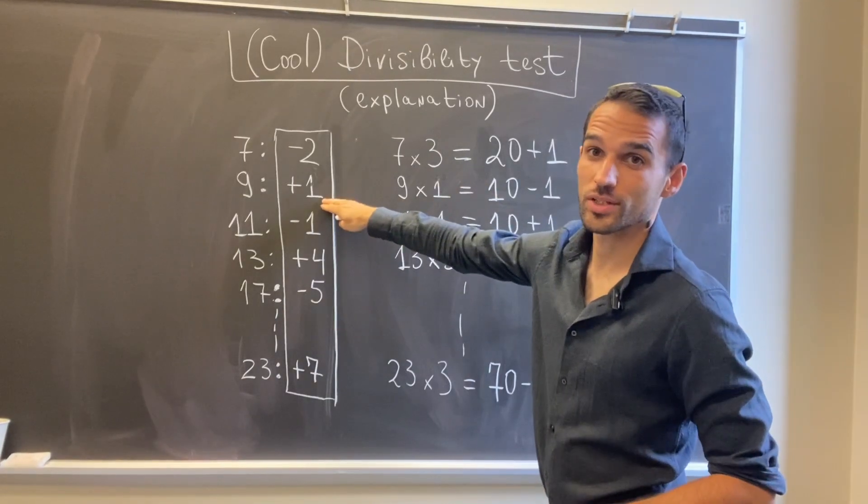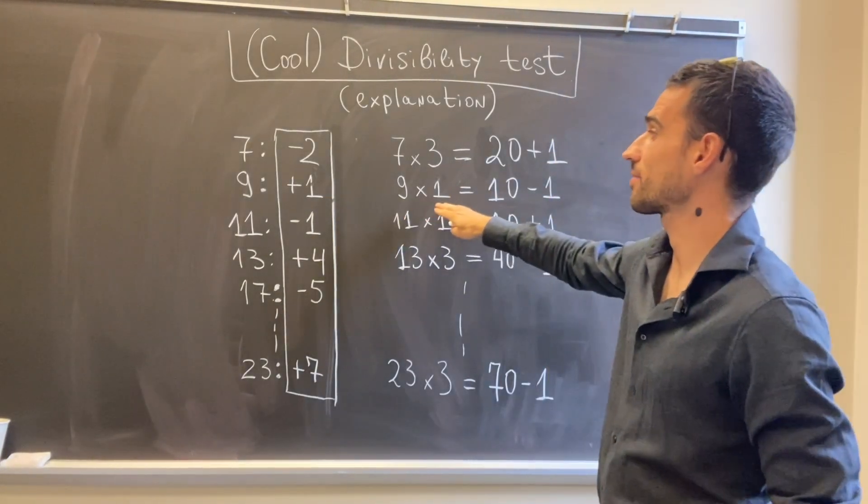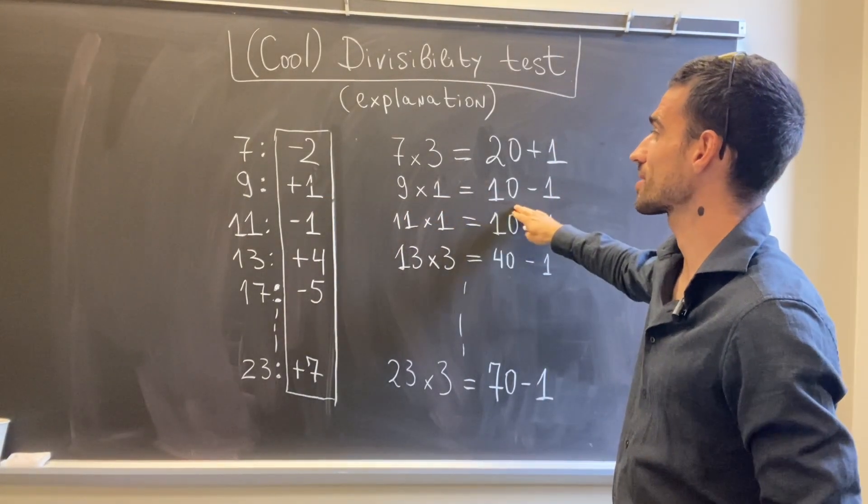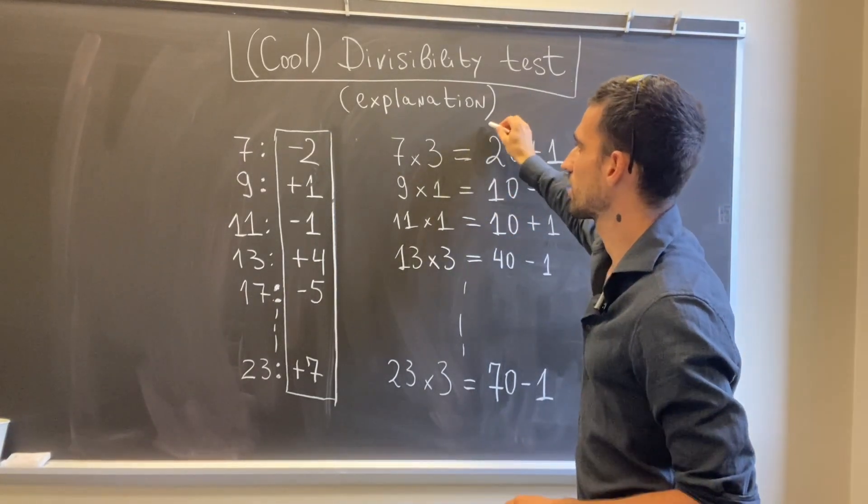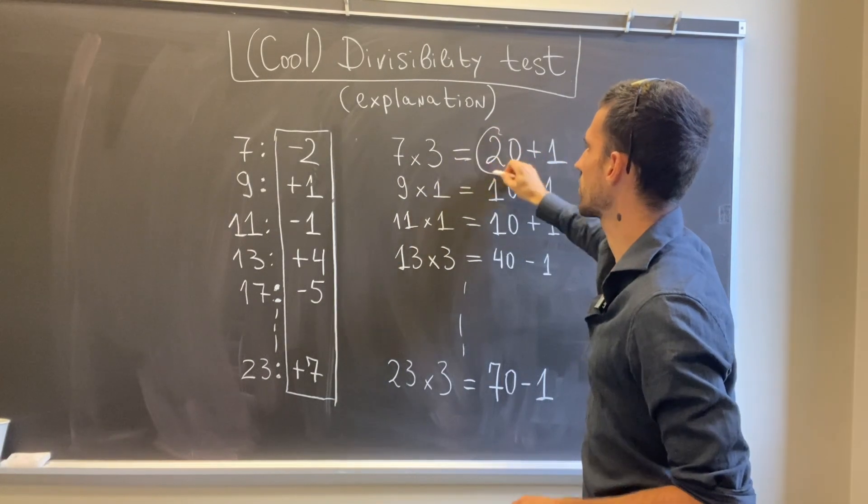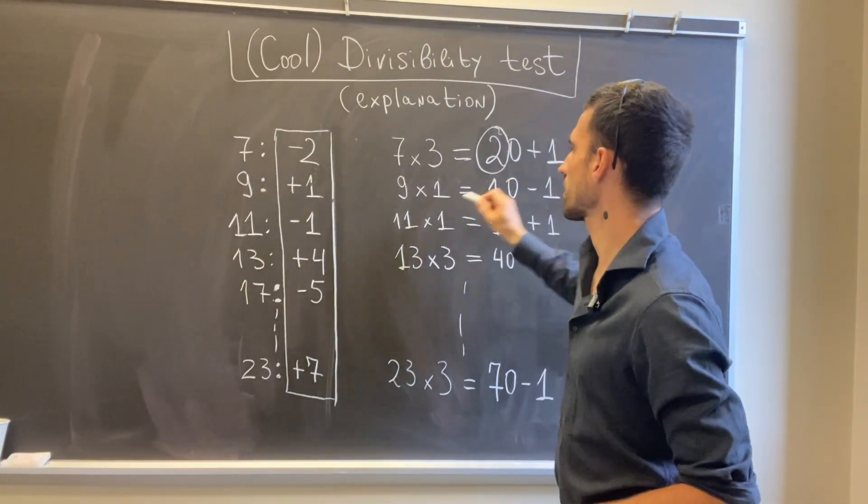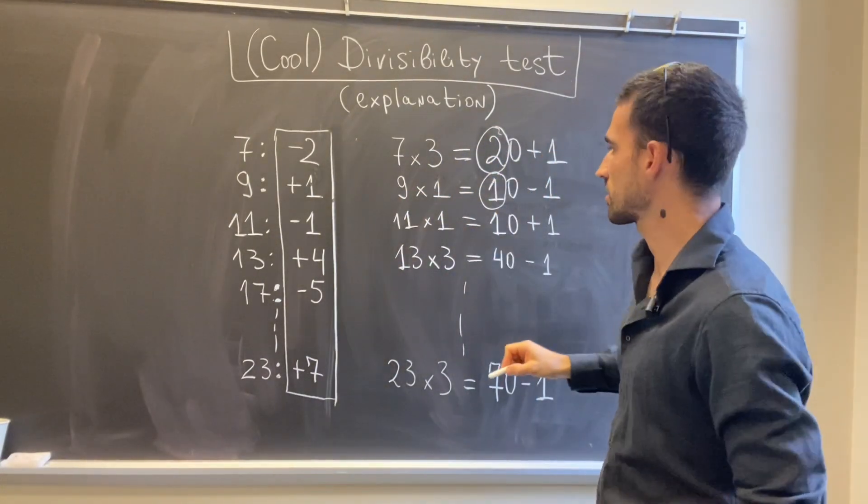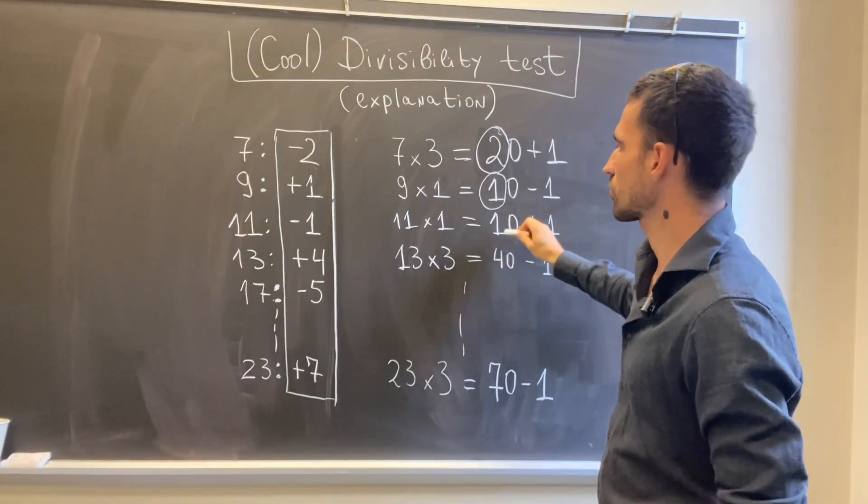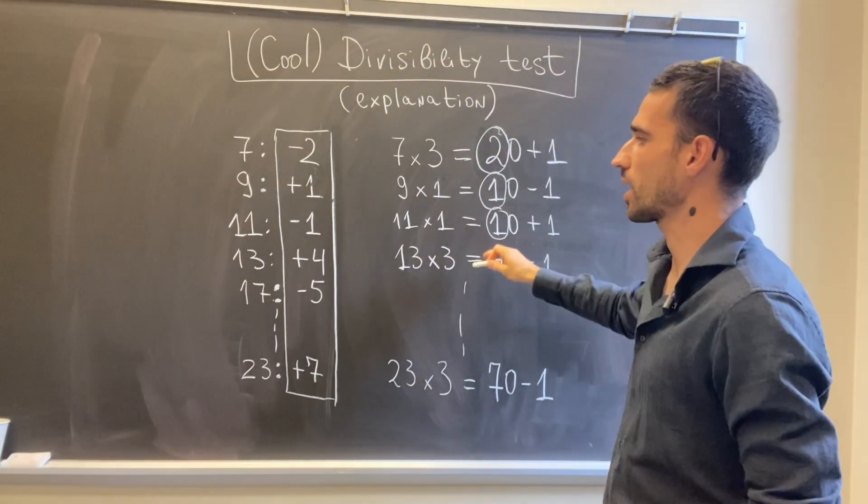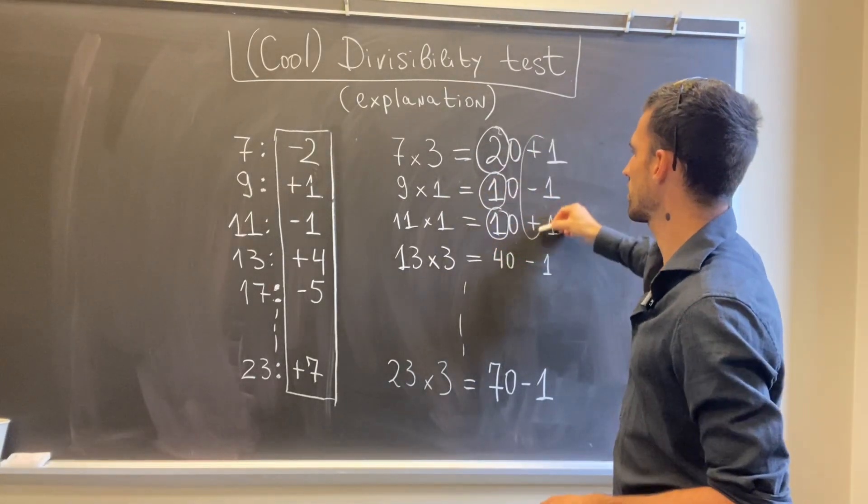For 9 the constant was plus 1. We have 9 times 1 equals 10 minus 1. So basically here that 2 comes from here and this 1 comes from this digit. Similarly for 11 we have 10 plus 1, so again we have 1 and you see the signs over here are the opposites of the signs over there.